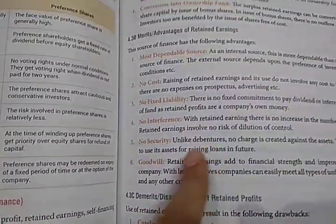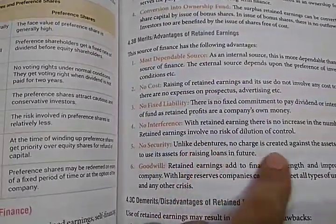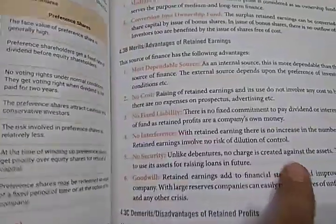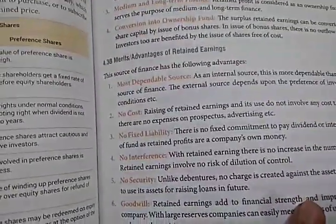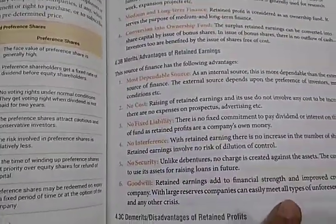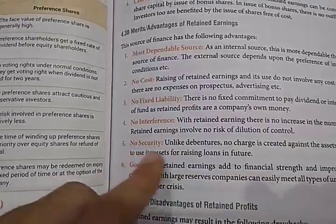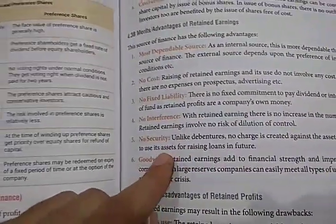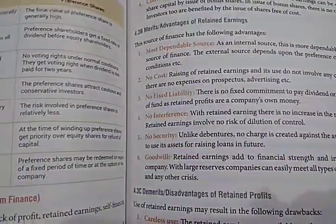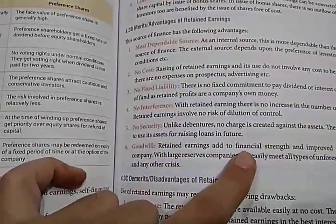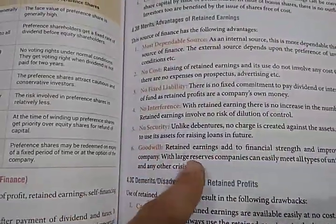Third is no interference — since it is solely the company's own profit, there is no interference from any shareholder. Fourth is no security — unlike debentures where the company has to mortgage assets as security, retained earnings require no security or asset pledge to raise funds. Fifth is goodwill — if retained earnings are strong, the company's goodwill and reputation also increase.